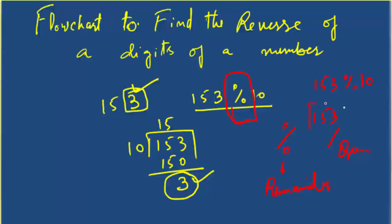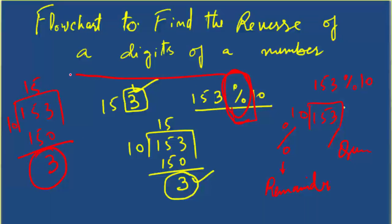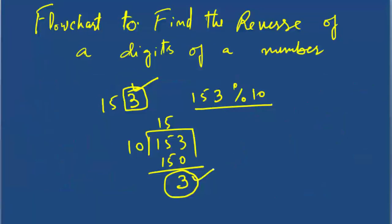Divide means we have to find the quotient (coefficient). So if I write 153 % 10, it means I divide 153 by 10 but I don't take the quotient. With the percentage operator we will not get 15 — we will get 3, which is the remainder. But with division, 153 divided by 10 gives us 15.